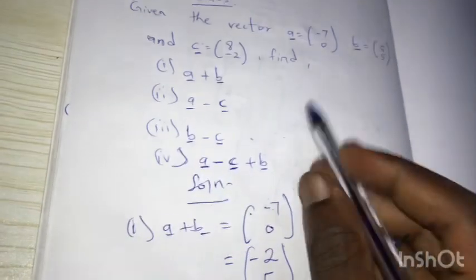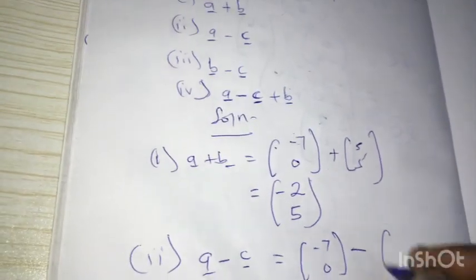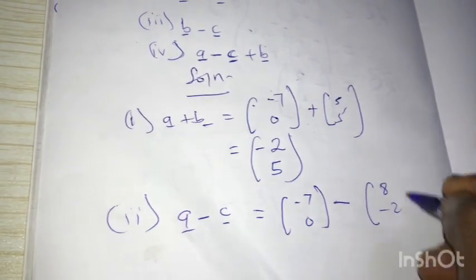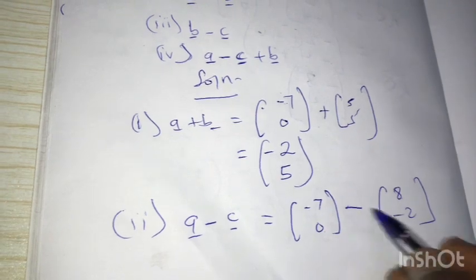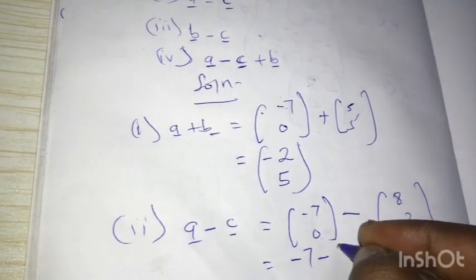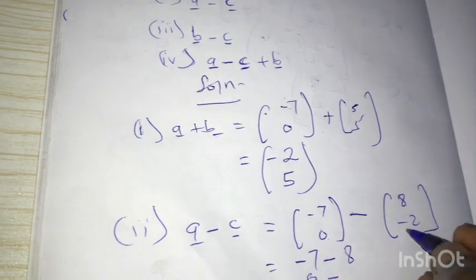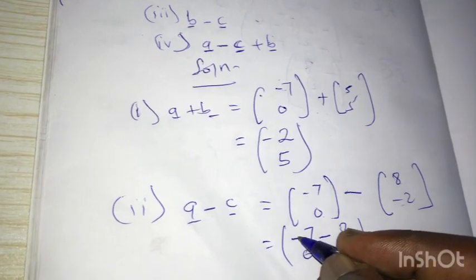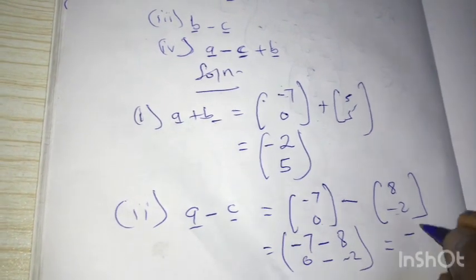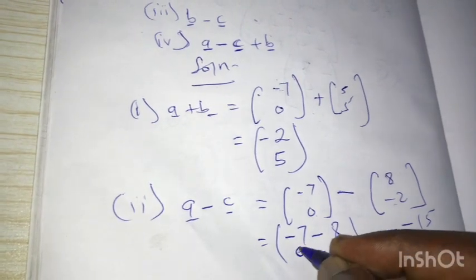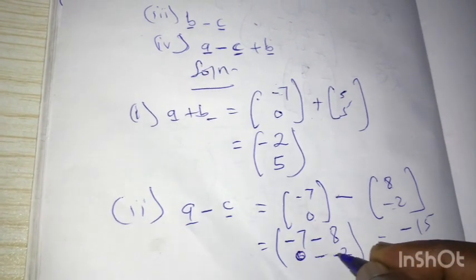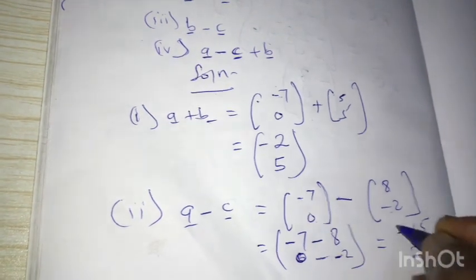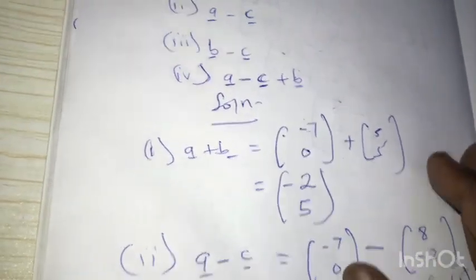From the question, a is (-7, 0), as you can see here, minus c, which is (8, -2). Top minus top, down minus down: negative seven minus eight, and zero minus negative two. Negative seven minus eight — if you only have seven and you go another eight, you get negative fifteen. Then zero minus negative two: negative becomes positive, so zero plus two is two.